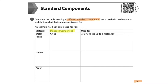When completing this table, it is essential that you use a different standard component for each material area. You will not be awarded marks for answers which you have listed twice. There are six marks available in total for this question, so you will be awarded one mark per correct answer in each box.